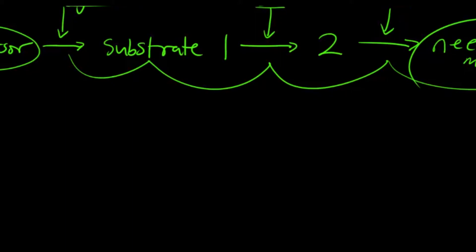And what Beadle and Tatum did was they maybe mutated the gene that coded for enzyme A, cutting that out of the system, which prevented the precursor being changed to the substrate.